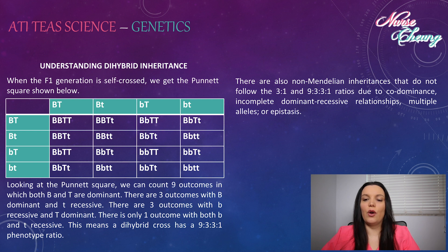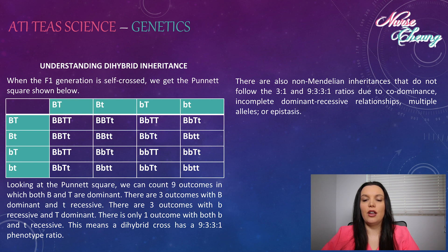There are also non-Mendelian inheritance patterns that do not follow the three to one or nine to three to three to one ratio, due to co-dominance, incomplete dominant-recessive relationships, multiple alleles, or epistasis.